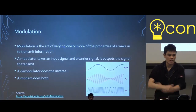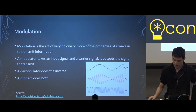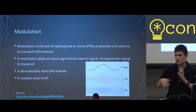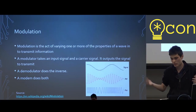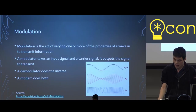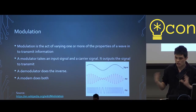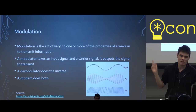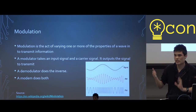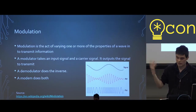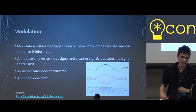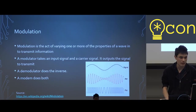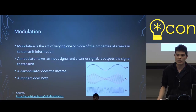Next is modulation. Modulation is the act of varying one or more properties of a wave in order to transmit information. A modulator takes an input signal — the binary string, up when it's one, down when it's zero — and a carrier signal, which is the wave you are modulating, usually sine or cosine, and outputs the wave to be transmitted over the air. In the example of AM and FM radio, the input signal is an audio wave and the carrier is sine or cosine. For AM we change the amplitude of the wave, and for FM we change the frequency. A demodulator does the reverse, and a modem does both.